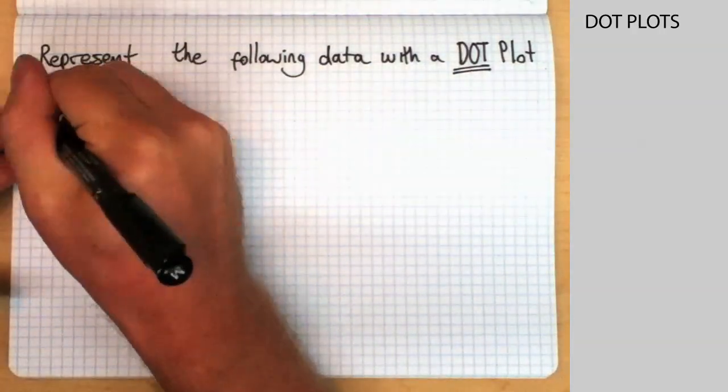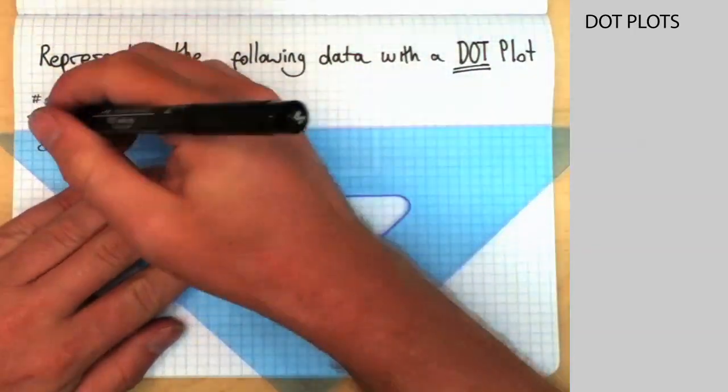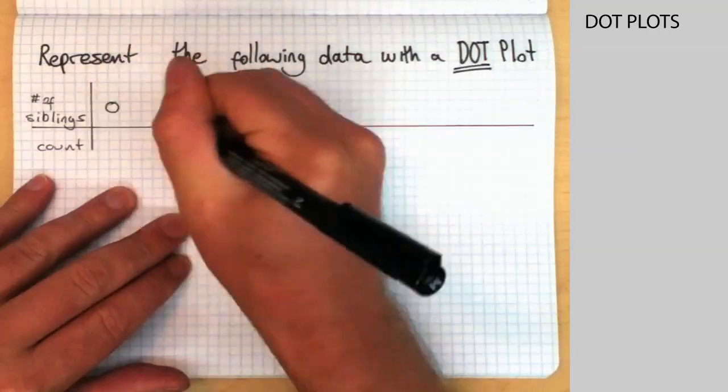What we're going to record is the number of siblings. We're going to ask a class of children how many siblings they've got, and we're going to tally each response.